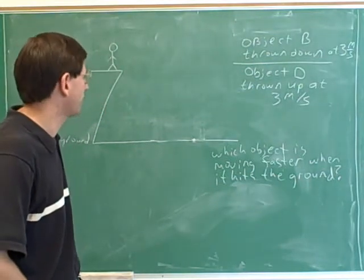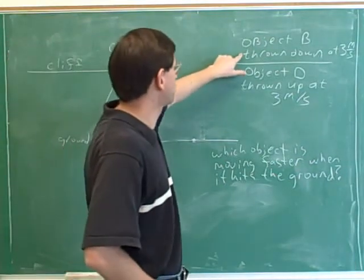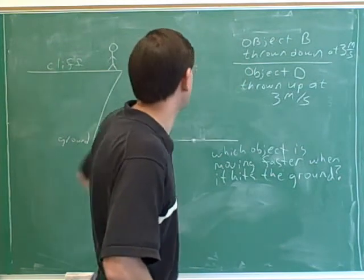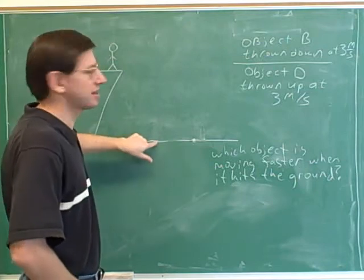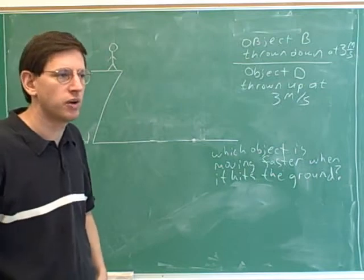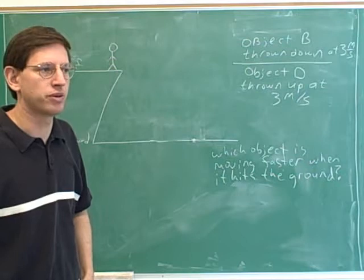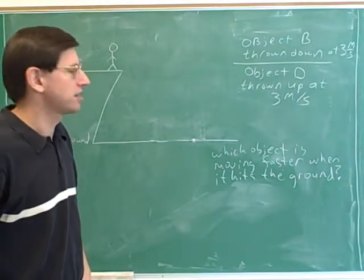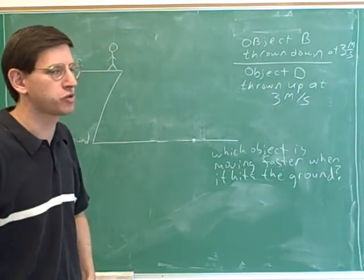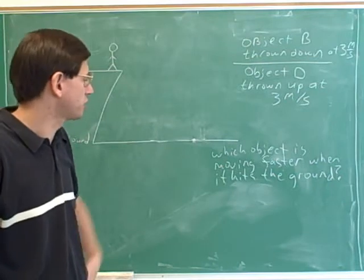Object B starts moving towards the ground at 3 meters per second, whereas object D is thrown up at 3 meters per second. The question is still: which object is moving faster when it hits the ground? Please pause the video and give this problem some careful thought. You shouldn't need any equations — you should be able to use conceptual ideas from what we've learned previously in these videos.